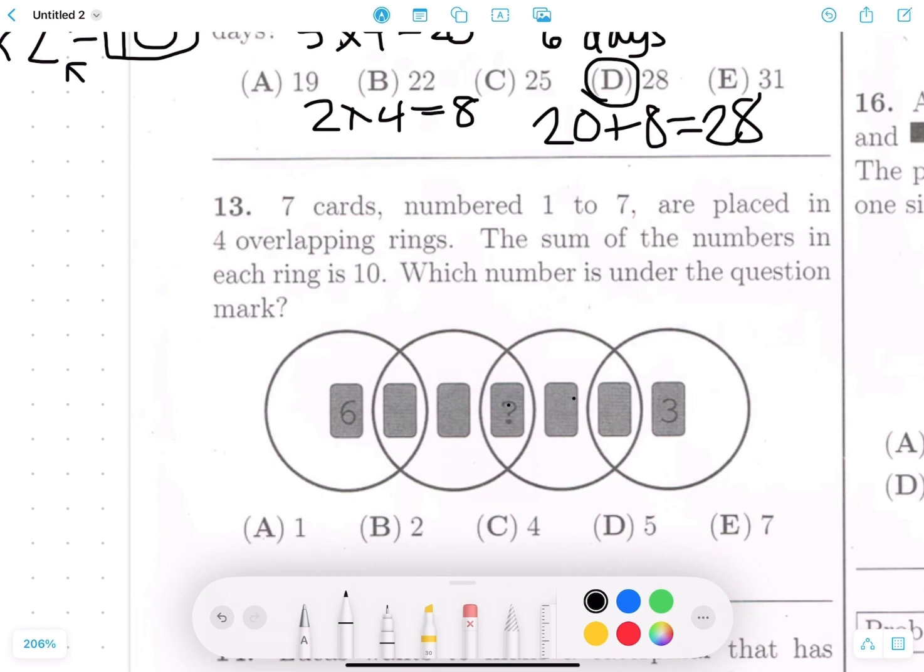Okay, problem number 13. Seven cards numbered one to seven are placed in four overlapping rings. The sum of the numbers in each ring is 10. Which number is under the question mark? Okay, this problem. We really need to highlight important information. So the cards are numbered one to seven. What does that mean? None of them can repeat. No repeats. This will be important. The sum of the numbers in each ring is 10.